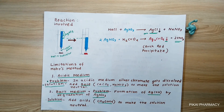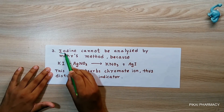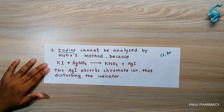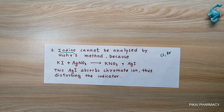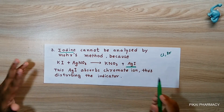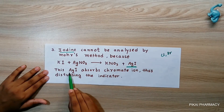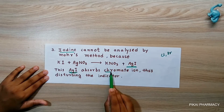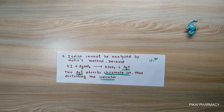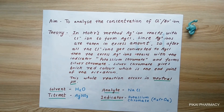Another drawback of the Mohr method is that it cannot analyze iodine — it can analyze chlorine and bromine, but not iodine. When the iodide analyte KI reacts with AgNO₃, it forms KNO₃ and AgI, and this AgI absorbs the chromate ion, disturbing the indicator and resulting in faulty endpoints. This was all about the Mohr method of precipitation titration.